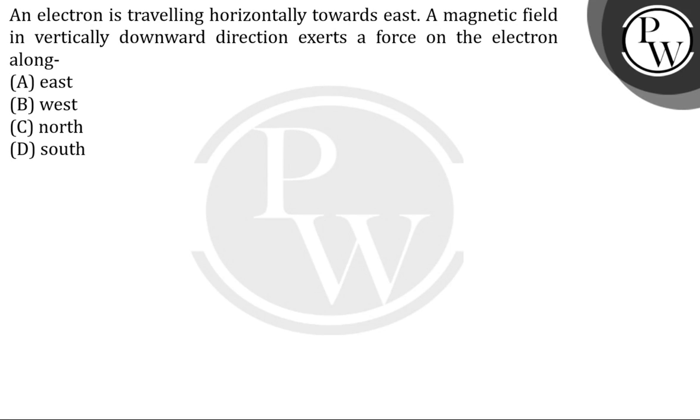An electron is traveling horizontally towards east. A magnetic field in vertically downward direction exerts a force on the electron. So in which direction is it exerting the force?